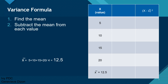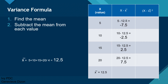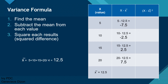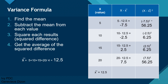The next step is to subtract the mean from each value, giving us our second column (X minus the mean). For the first number, 5 minus 12.5 gives negative 7.5. We do this for all numbers: 10 minus the mean, 15 minus the mean, 20 minus the mean. After that, we create a third column to square each result — these are called the squared differences. Negative 7.5 squared equals 56.25, and we repeat this for the rest. The last step is to get the average of the squared differences: add all numbers in the third column and divide by how many numbers we have, giving us the variance.